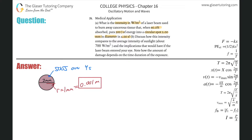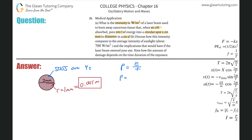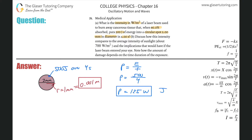Joules per second — do I know anything that relates those two? Sure: power. Power is energy per time. Power equals 500 joules divided by 4 seconds. Take the calculator, divide 500 by 4, and it's 125 watts. So the power being supplied to this area is 125 watts, meaning 125 joules are being absorbed every single second.